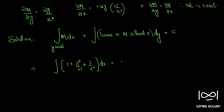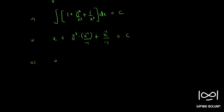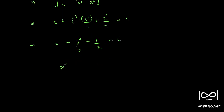Integrating with y as constant: the integral of 1 is x, the integral of y²/x² is y²·(x⁻¹/(−1)) = −y²/x, and the integral of 1/x² is x⁻¹/(−1) = −1/x. So we get x − y²/x − 1/x = c. Multiplying throughout by x gives x² − y² − 1 = cx.